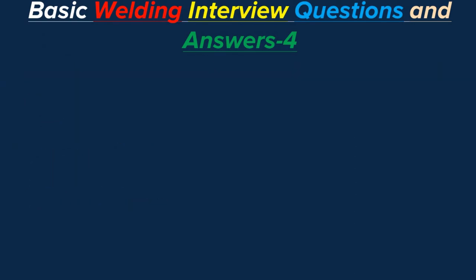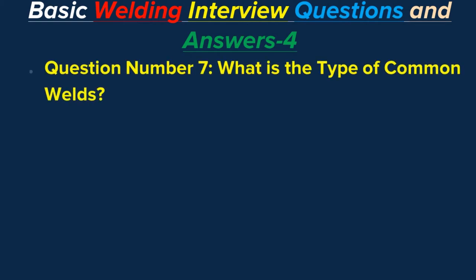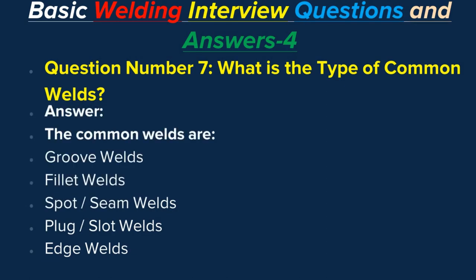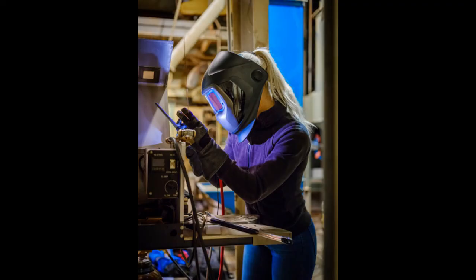Question number seven: What are the types of common welds? Answer: The common welds are groove welds, fillet welds, spot welds, seam welds, plug welds, slot welds, and edge welds.